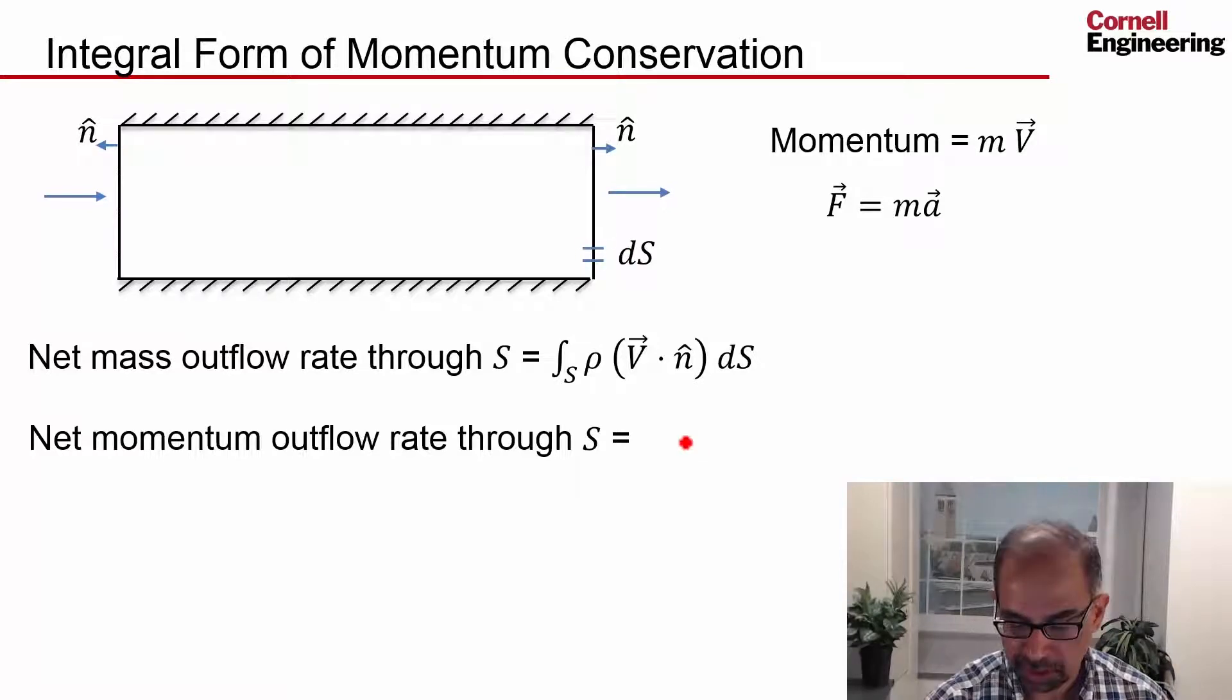The mass flow rate through that we saw was ρ v·n ds, and momentum is mass times velocity. So the momentum rate is the mass flow rate times velocity. I take the mass flow rate and multiply it by the velocity.